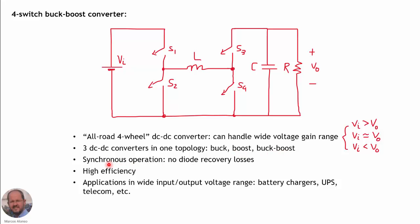It's also interesting because the converter provides synchronous rectification, since we are using fully controlled switches — so we don't have diode recovery losses as in regular DC-DC converters implemented with an output diode. The efficiency of this converter can be very high, and it can be applied in many applications with a wide input and output voltage range, for example in battery chargers, UPS applications, telecommunications applications, and so on.